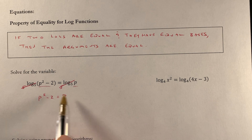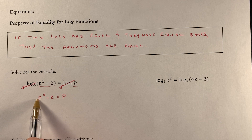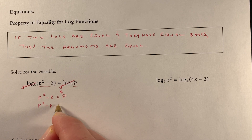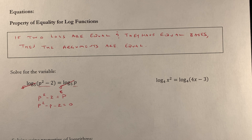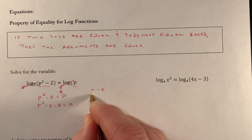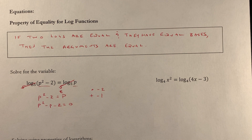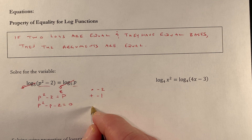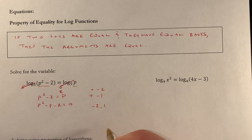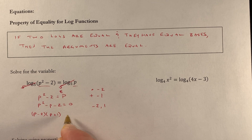Since I have a p squared and a p, I want to get everything to one side where the p squared is positive. I'll move p over to get p squared minus p minus 2 equals 0. Now I can solve by factoring. I need two numbers that multiply to negative 2 and add up to negative 1 — that's negative 2 and 1. Negative 2 times 1 is negative 2, and negative 2 plus 1 is negative 1. So the factored form is (p minus 2)(p plus 1) equals 0.